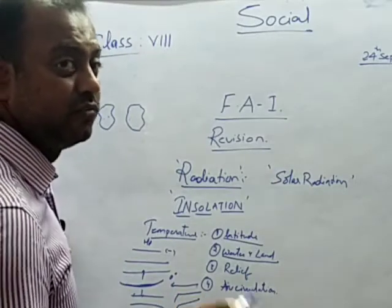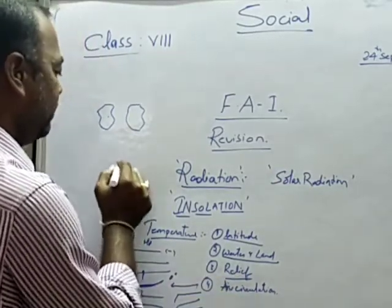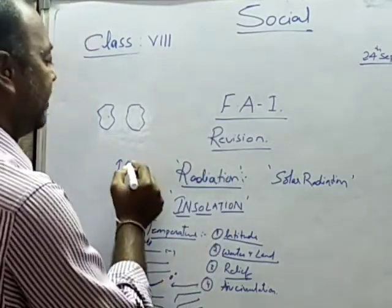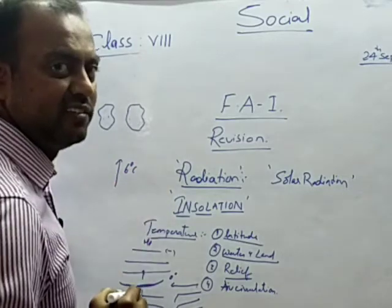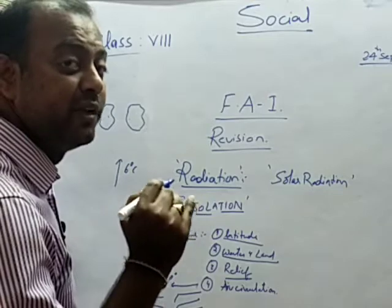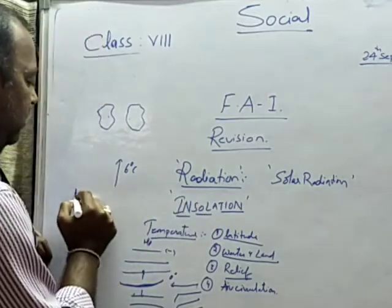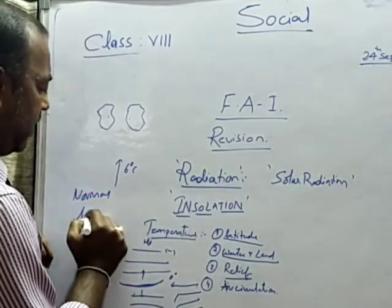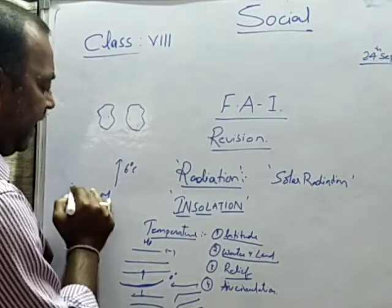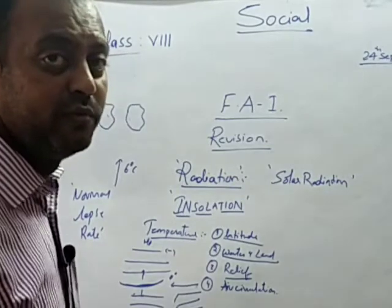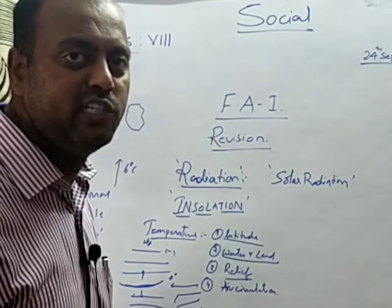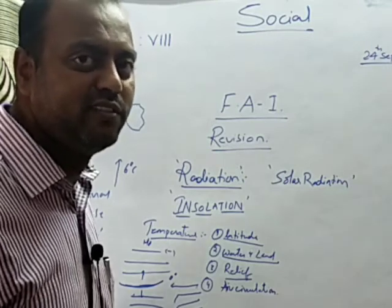The third factor is relief. As you travel up from sea level, the temperature decreases at a rate of six degrees Celsius for every one thousand meters. This is called the normal lapse rate. This is how height from sea level also matters in understanding the distribution of temperature. That is what we have learned in the energy from the sun chapter. Remaining things we will see in the next class. Thank you.